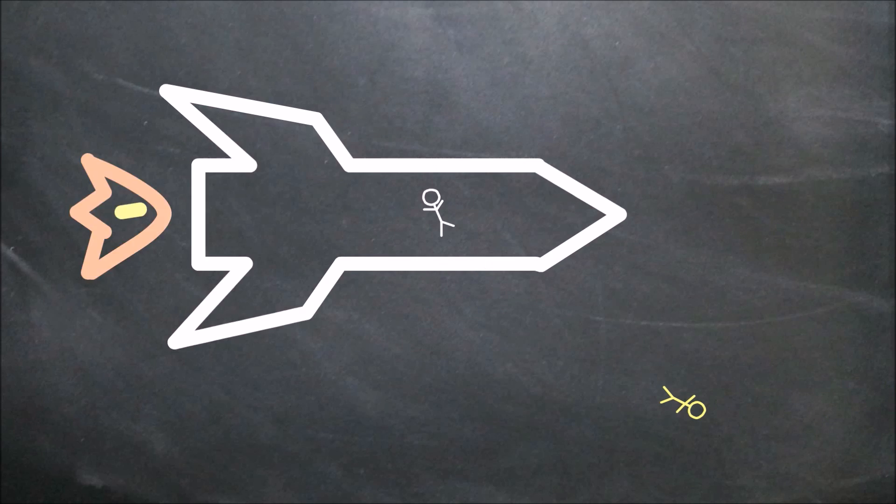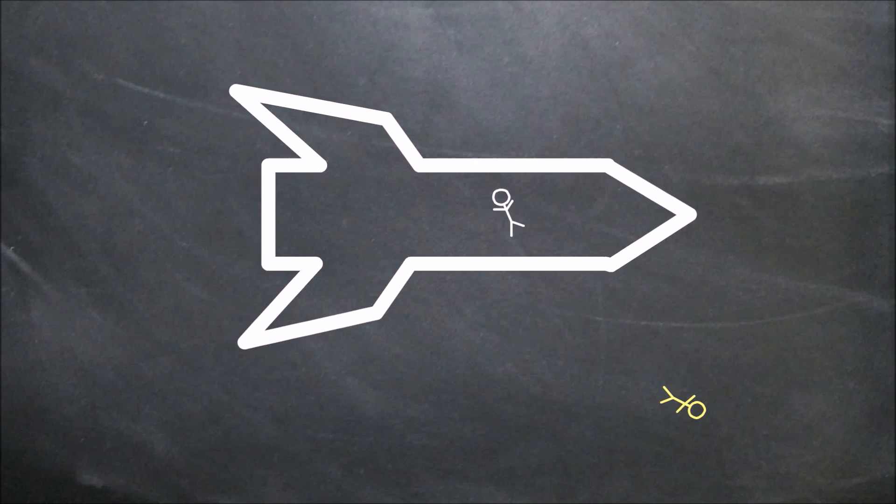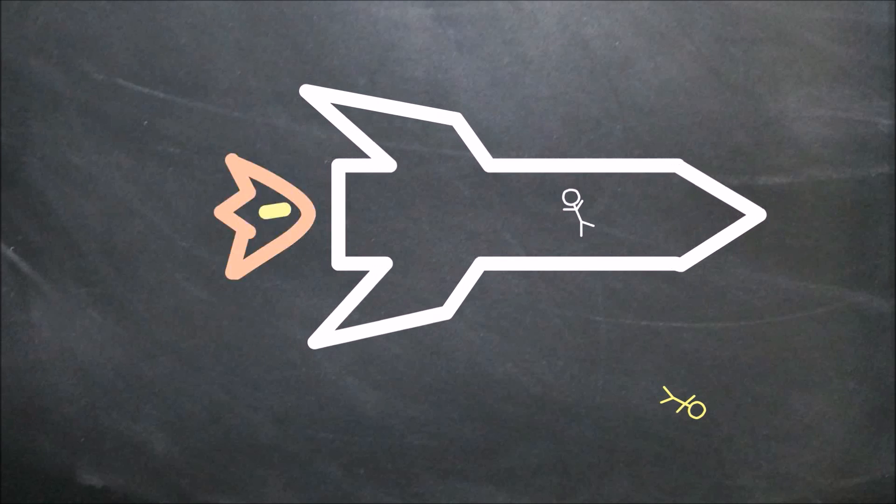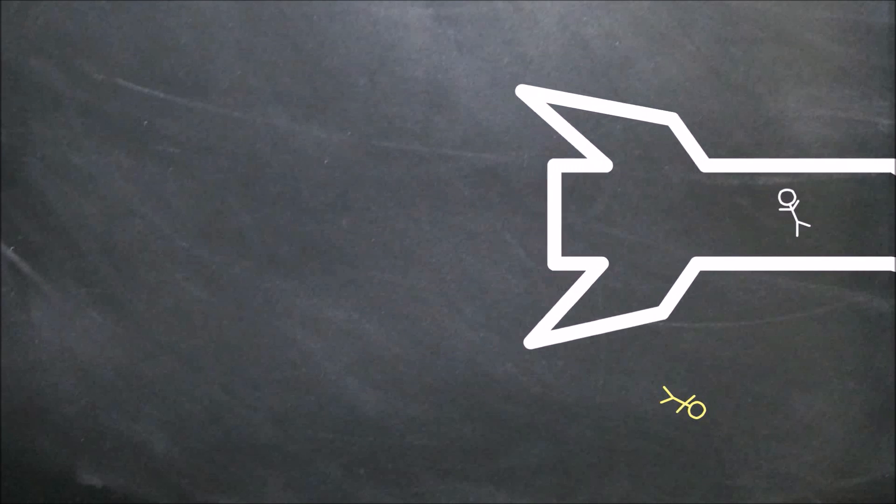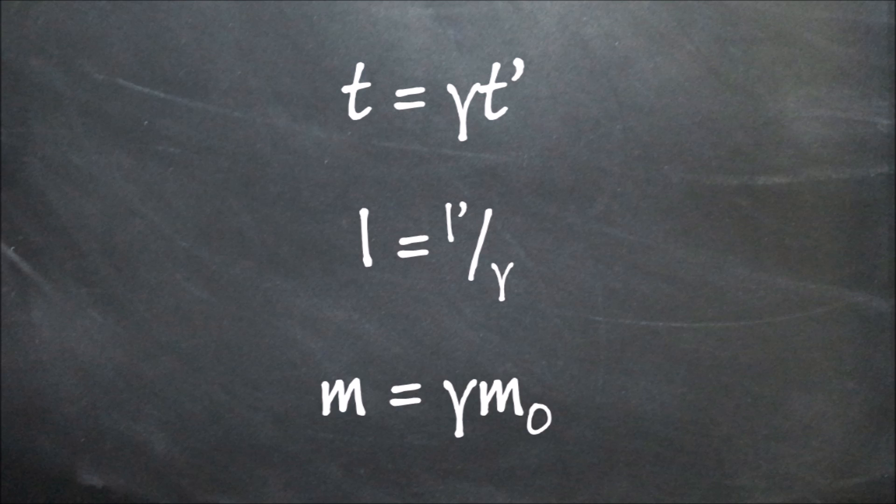Now, of course, all your friend would notice is that it's getting harder and harder for the rocket to accelerate, like it has more inertia than before. It looks, just like space and time, as though mass is relative.